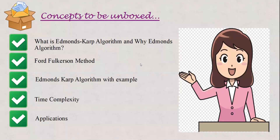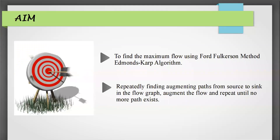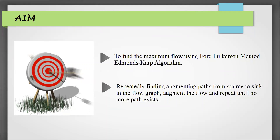This algorithm is used to find the maximum flow in a network. Today I will discuss the following points: the Ford-Fulkerson method, tracing of the algorithm with an example of a flow network, its time complexity, and applications. The objective is to find the maximum flow by implementing the Ford-Fulkerson method and finding different augmenting paths in the network from source to destination until no such path exists.